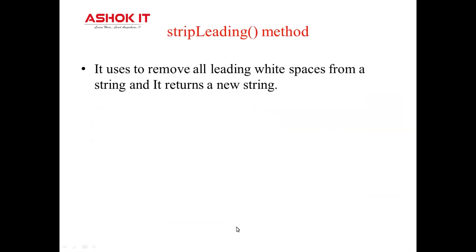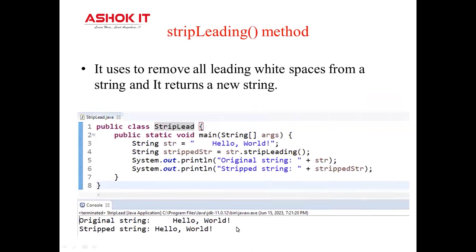The stripLeading method removes all leading white spaces from a string. In this example, white space is given before the hello word, so it will remove that and display the original string as hello word with the white space, and the stripped string is after removing that white space.